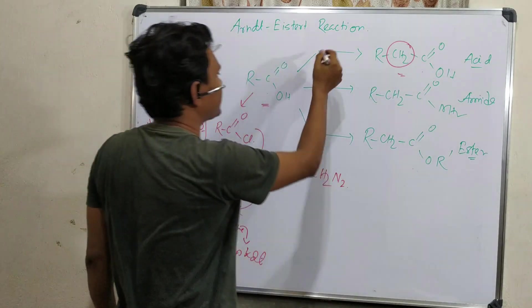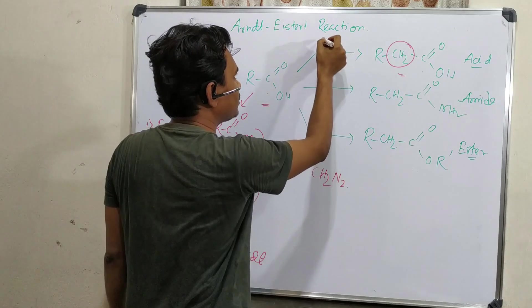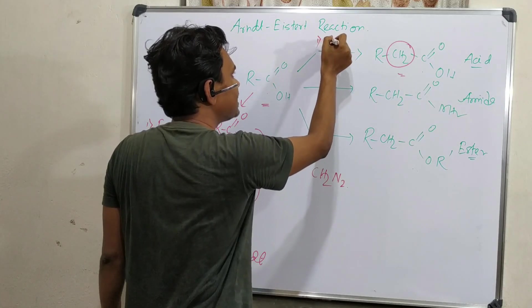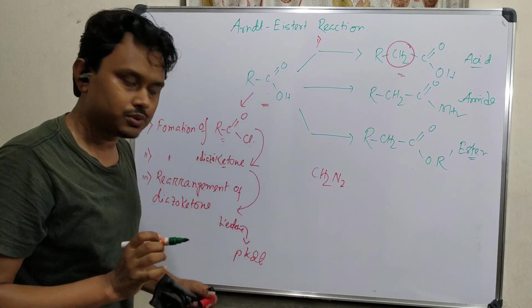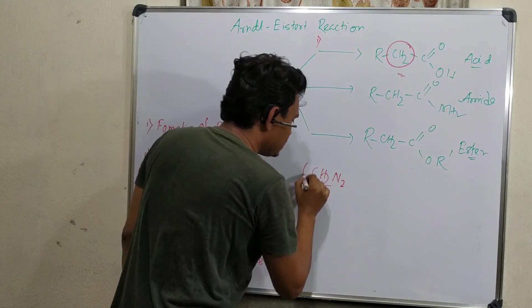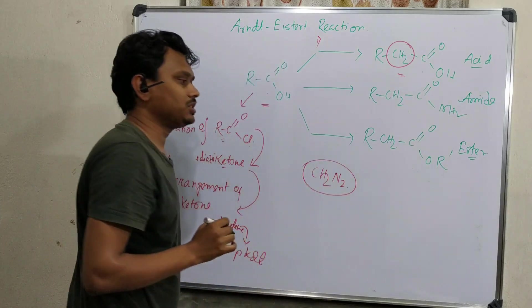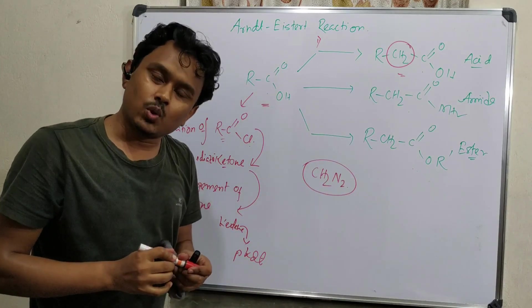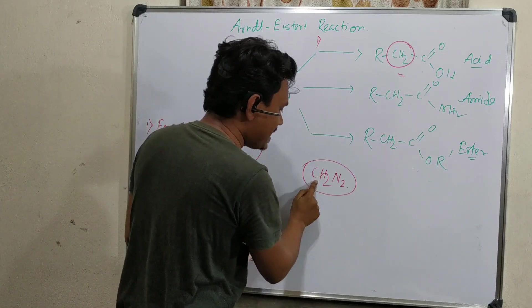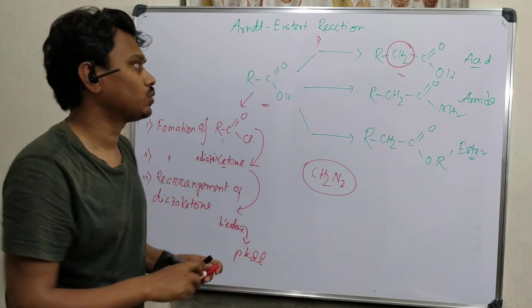Before going to details, let me give a little description about this reagent. First, this reaction is formation of acid chloride. Second is diazo ketone. It's a very explosive, poisonous, low boiling reagent. It acts as a base as well as nucleophile, and it is the source of the methylene group that is incorporated.